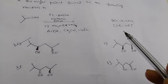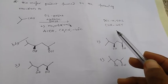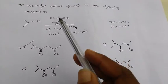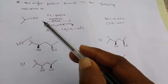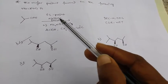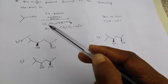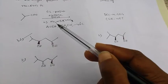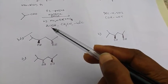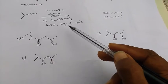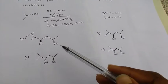Hi, this is Chiranjeevi. This question appeared in the December 19, 2016 CSIR NET exam. The question asks for the major product formed in the following reaction: we have an aldehyde compound reacting with L-proline, acetone, and DMSO, followed by tetramethylammonium borohydride complex, acetic acid, and acetonitrile at minus 40 degrees centigrade. We have four options to choose from.